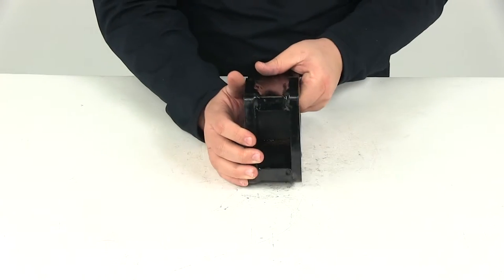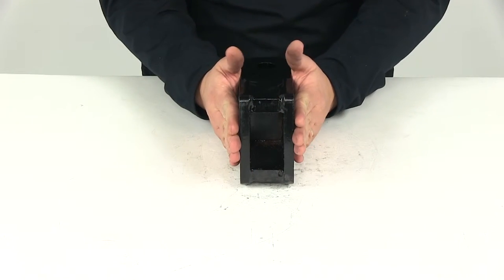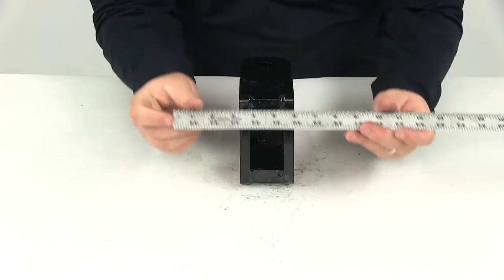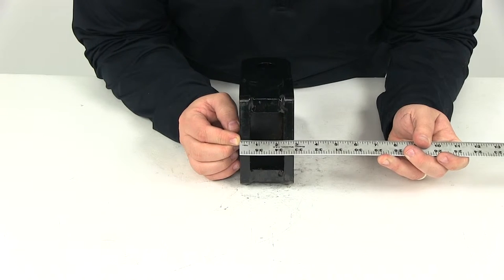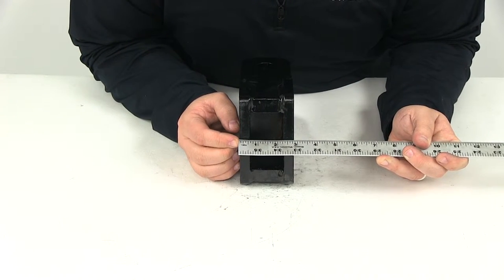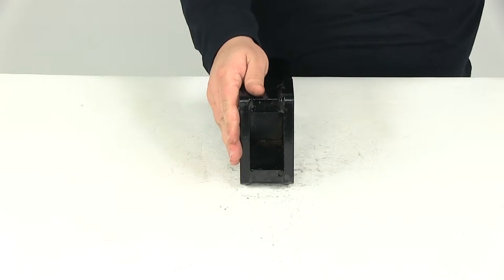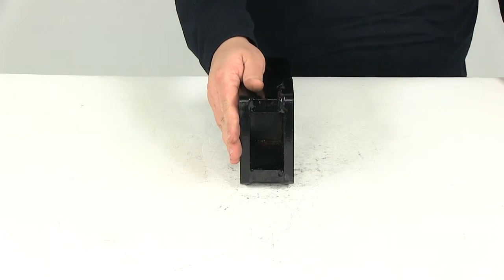Now if we take a measurement back here of the width that we have from outer edge to outer edge, that's going to give us a measurement of about two and seven eighths of an inch. So this is going to work perfectly in a three inch wide channel bracket.